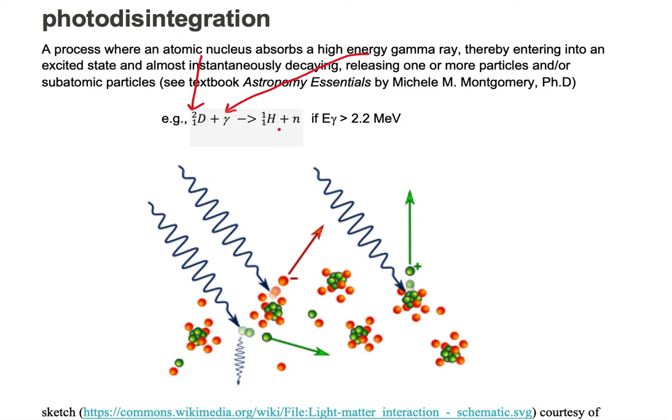Almost immediately, a hydrogen atom is produced, and in this particular case, we have a particle that's released called a neutron.